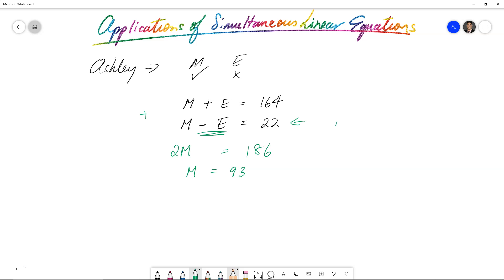So that means if the math score was 93 and the English score was 22 less than that, that means English must be 93 minus 22 and that becomes 71. So his English score should be 71 marks.